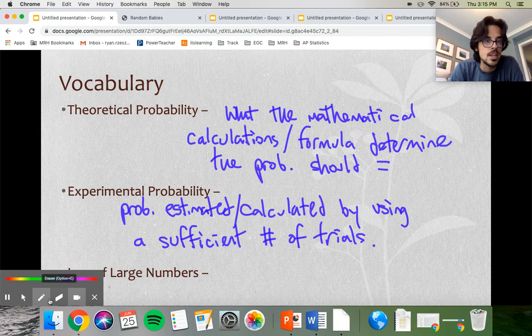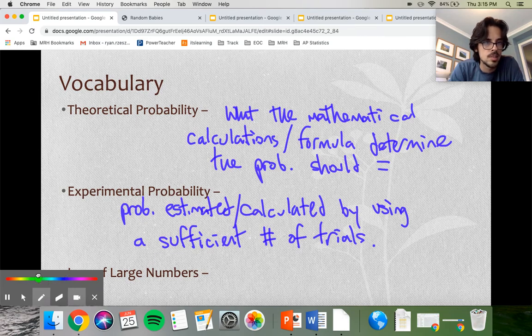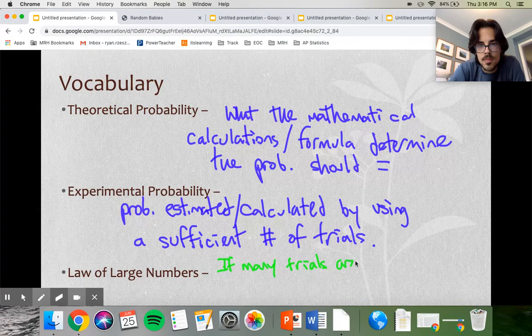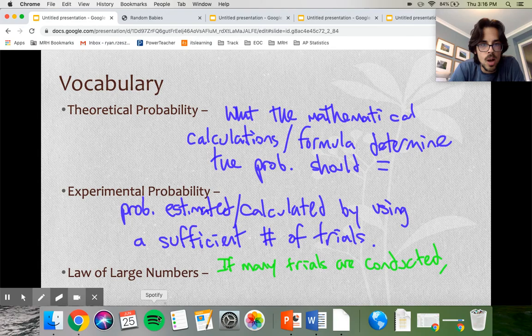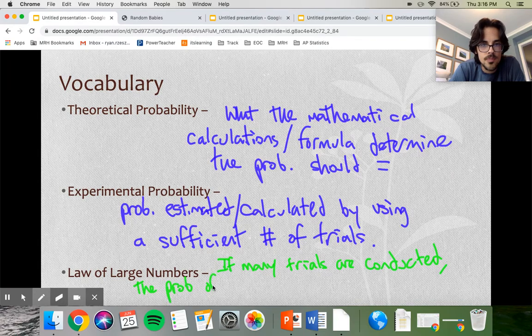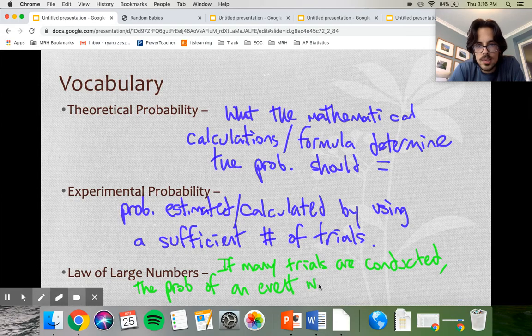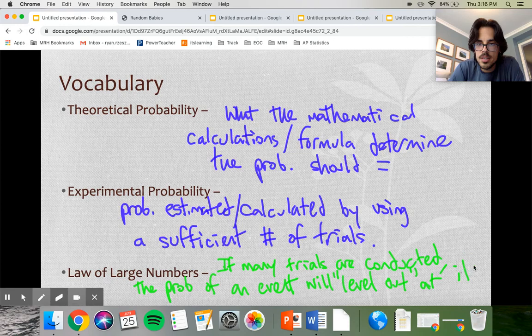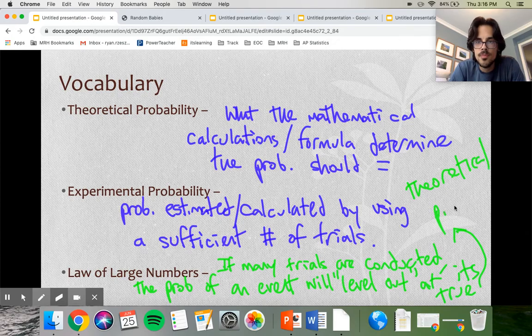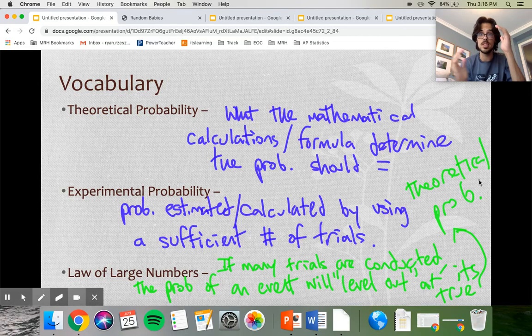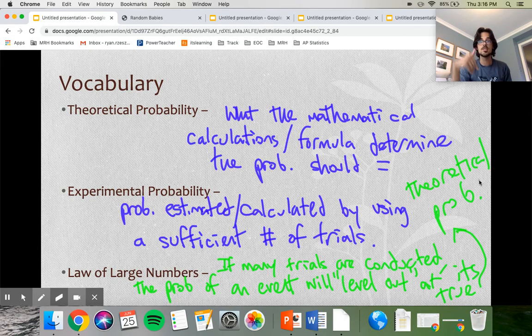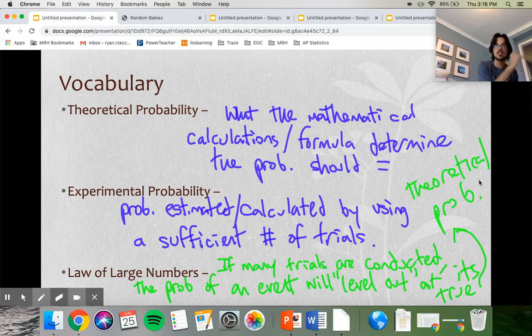The law of large numbers is basically repeating what I just said. It's talking about what we saw in that little applet, which is that if many trials are conducted, the probability of an event will level out at its true probability. Law of large numbers says if you do lots of trials, the probability that you get from your data is going to level out and be the probability that you were looking for. Those little spikes that we saw at the beginning will kind of go away, and it'll just flatten into the probability it's supposed to be.